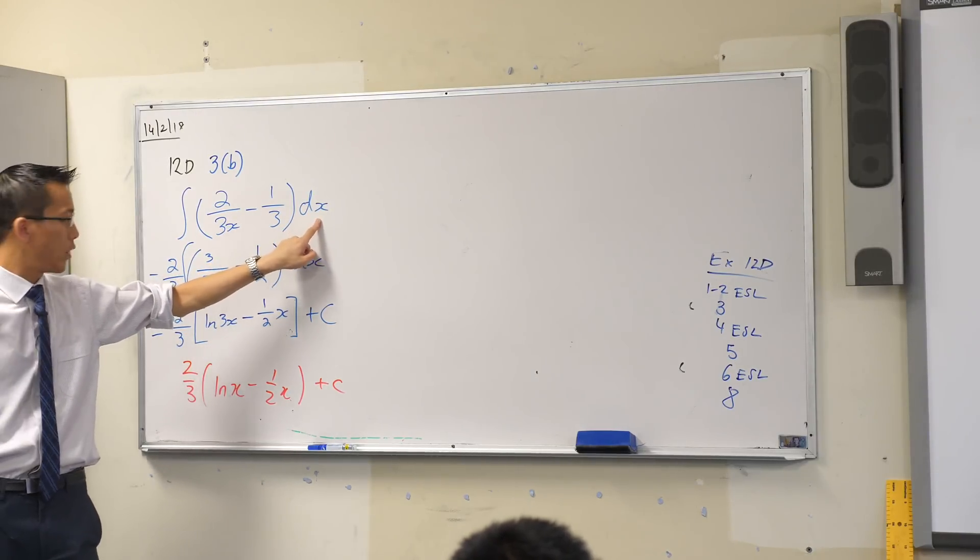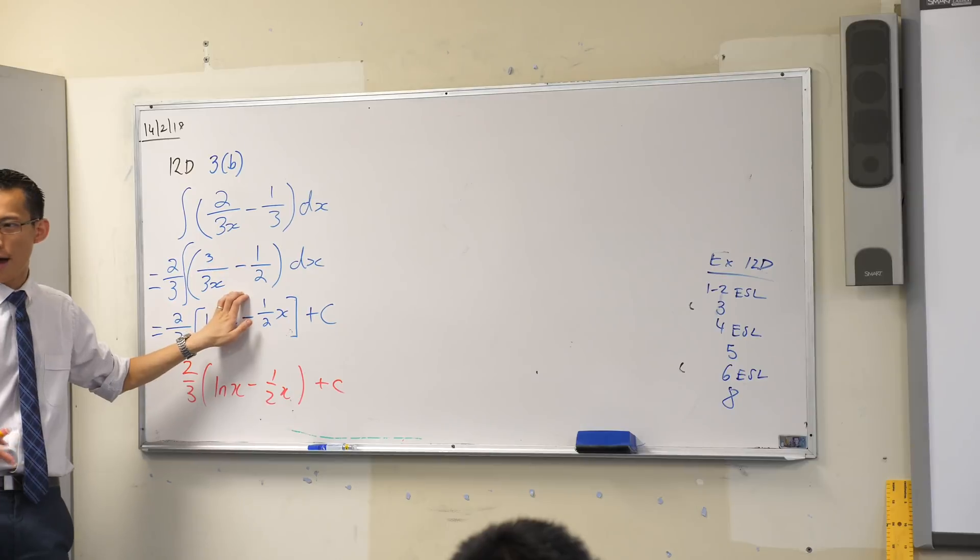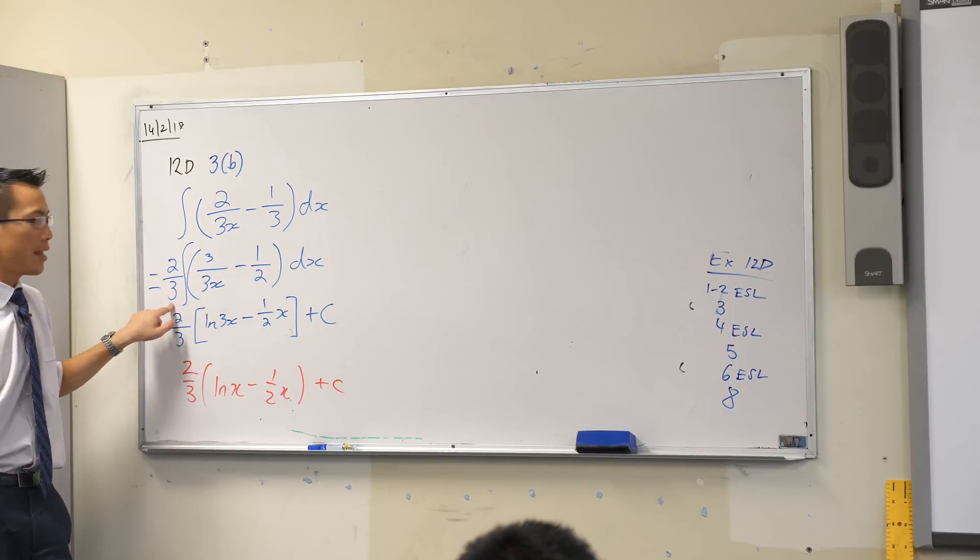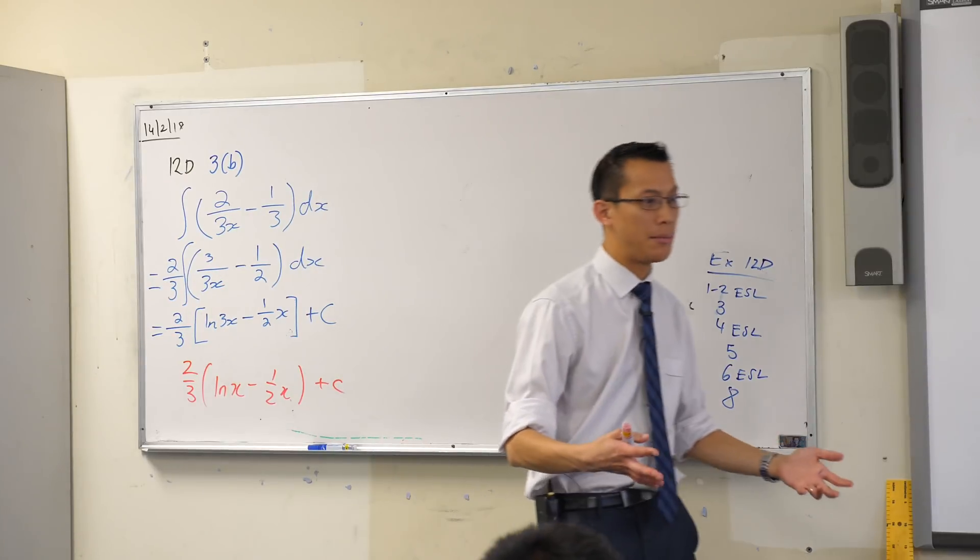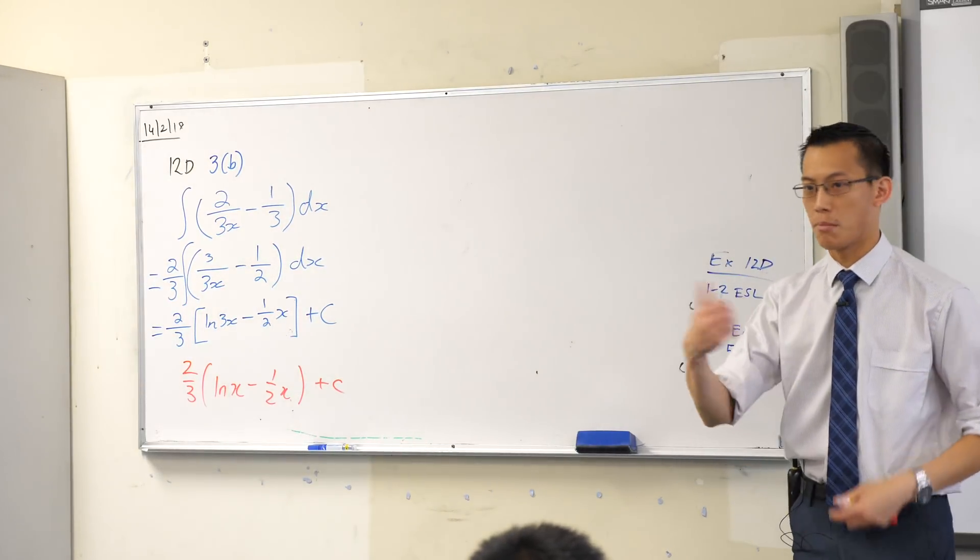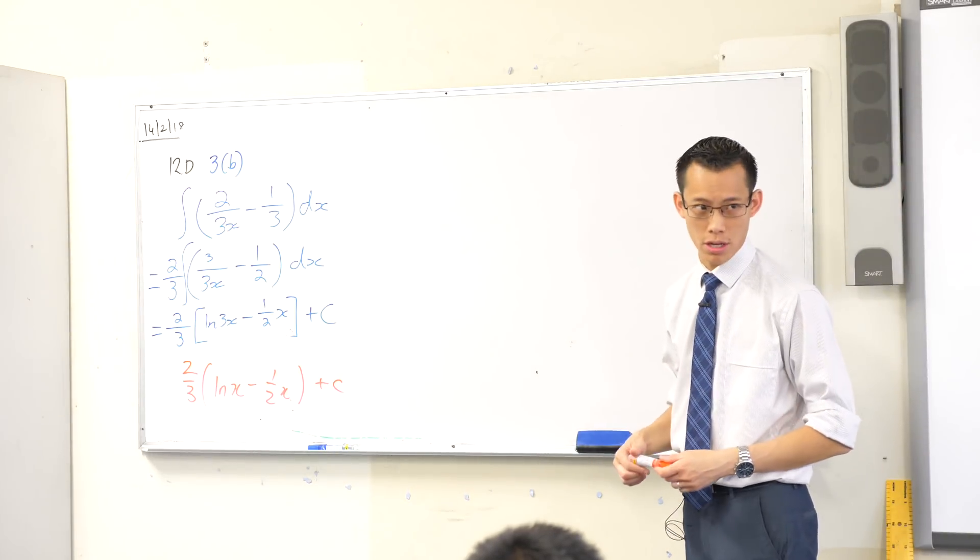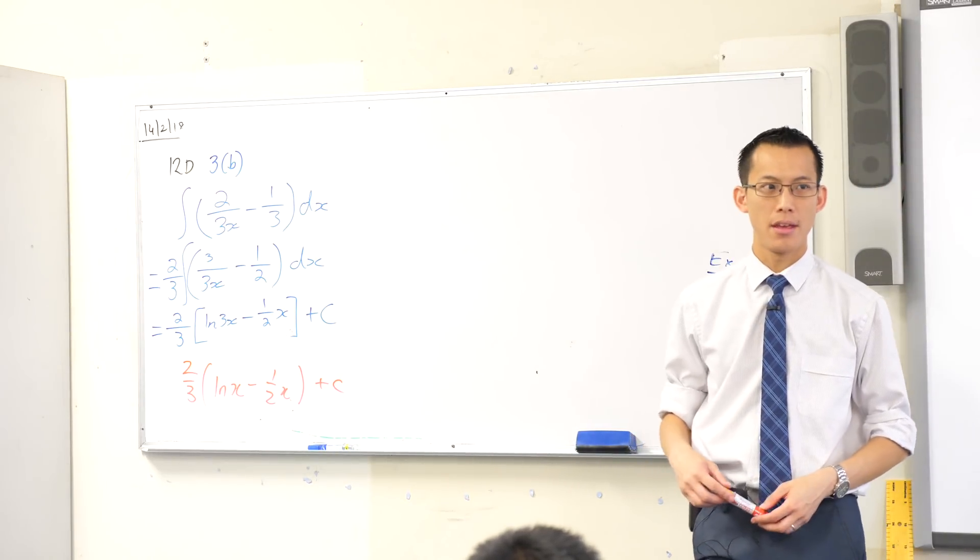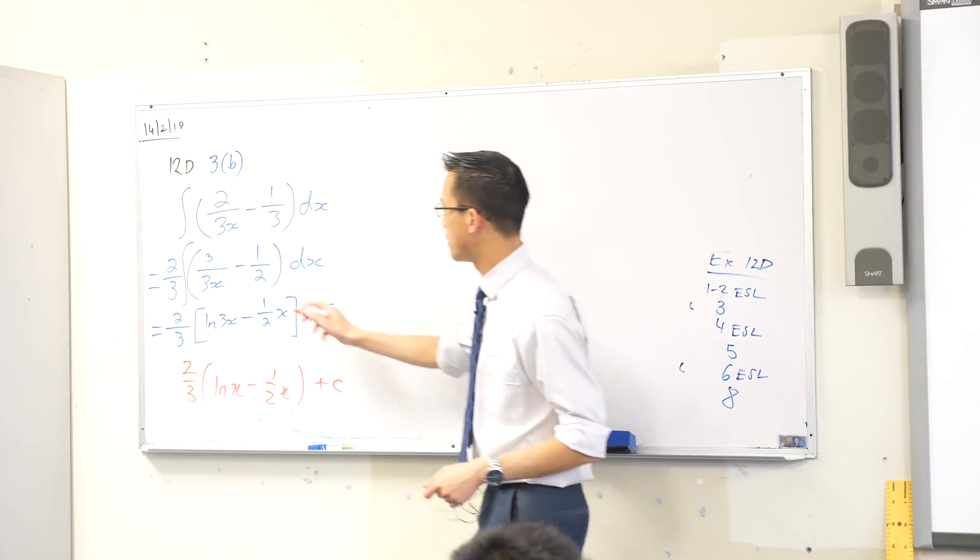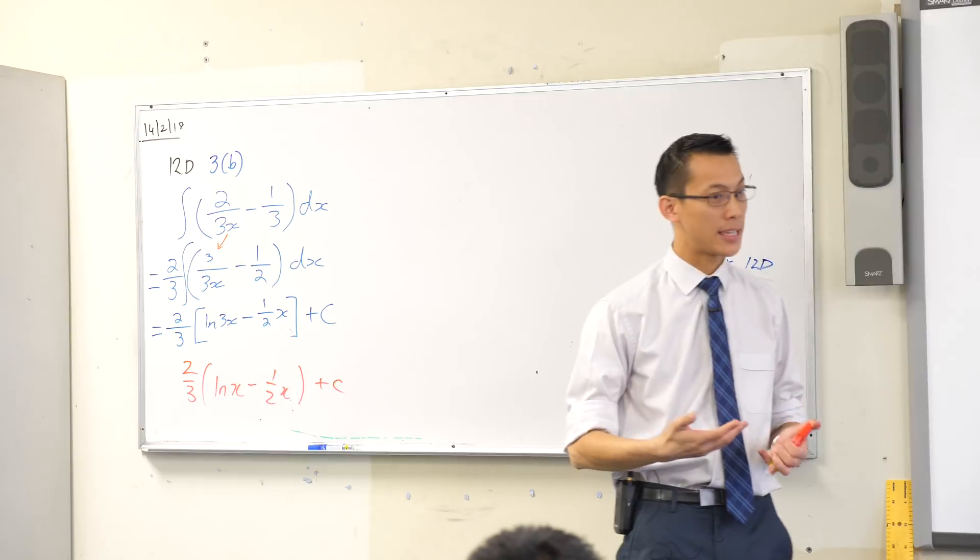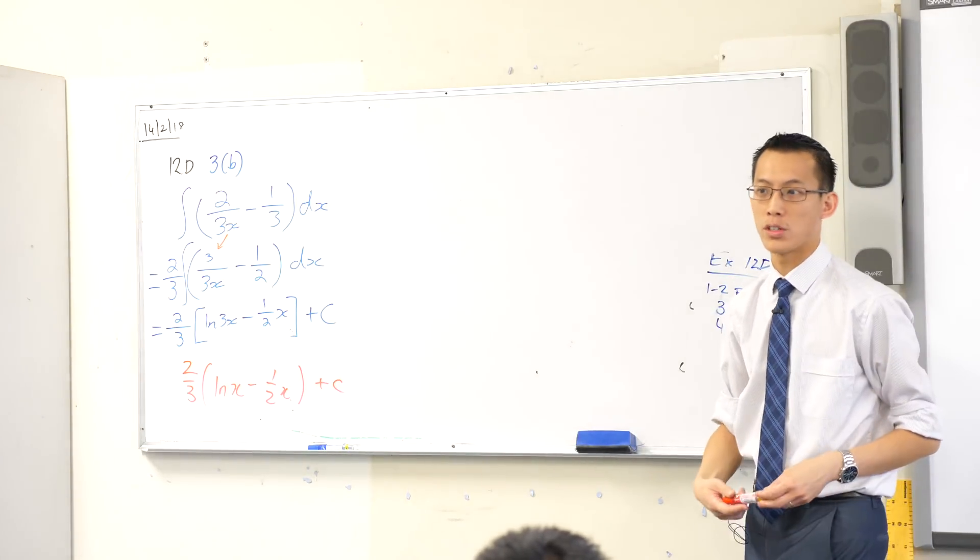Now I want you to follow with me the line of argument that Will has taken to get toward a solution. He's done this, he's put two thirds out the front. That's fine because he's multiplying by a constant, you can multiply or divide by any constant you like. Why has he chosen two thirds? Why that number? Well, have a look at what he has done, particularly here.